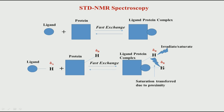STD NMR is therefore a very nice technique for weak binding, fast-exchanging ligands that exchange rapidly. The ligands are small molecules, so their signals are always much stronger compared to the protein, which is a large complex molecule with signals not easily identifiable. In STD NMR, you take the ligand in large excess compared to the protein — protein is at very low concentration — and then you irradiate.